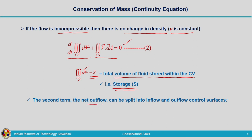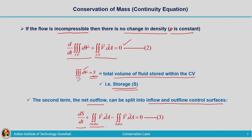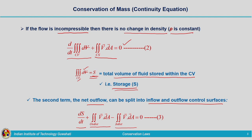So net outflow, considering inflow region and outflow region combined together, is represented by the surface integral of v dot dA across the control surface. We are having the net outflow split into inflow and outflow control surfaces. This expression is rewritten in this form: dS by dt plus surface integral of v dot dA across the outflow control surface minus surface integral of v dot dA across the inflow control surface equals 0.